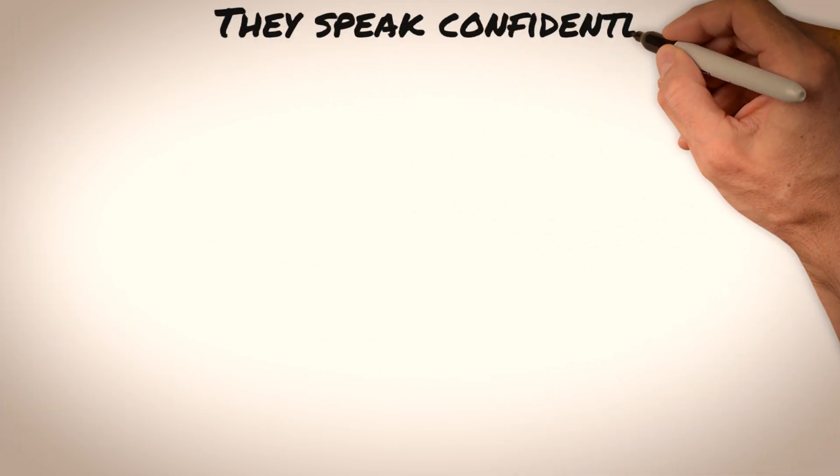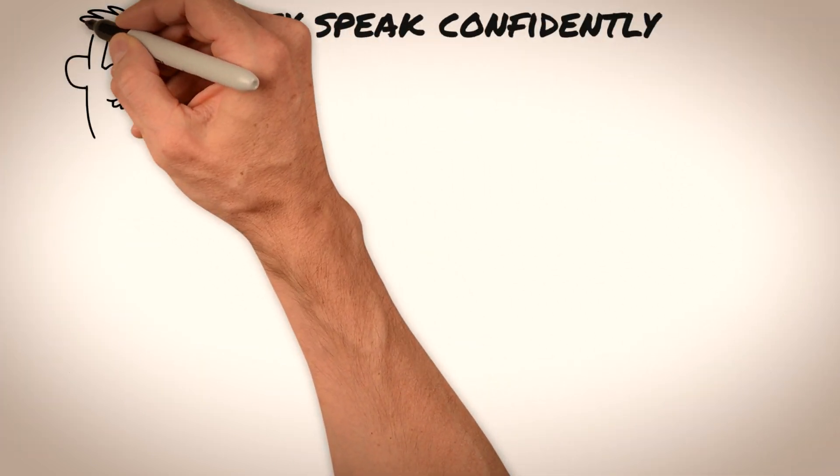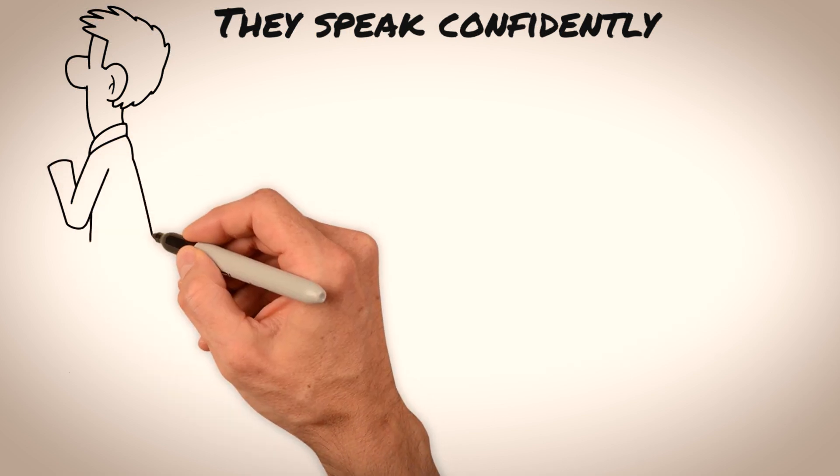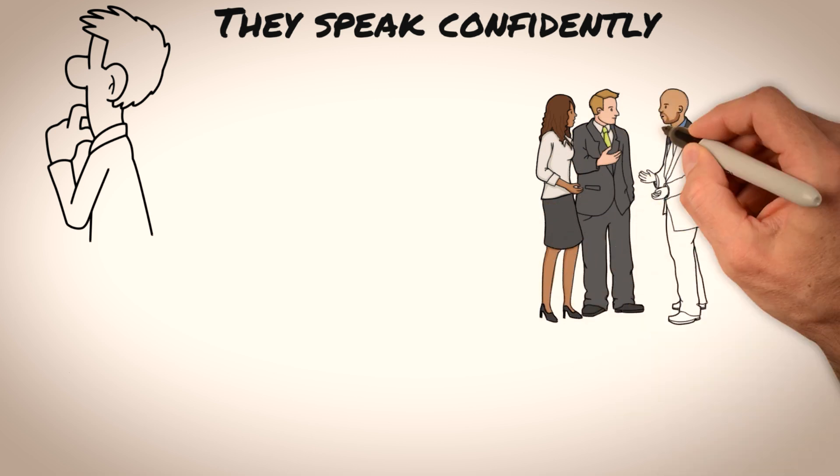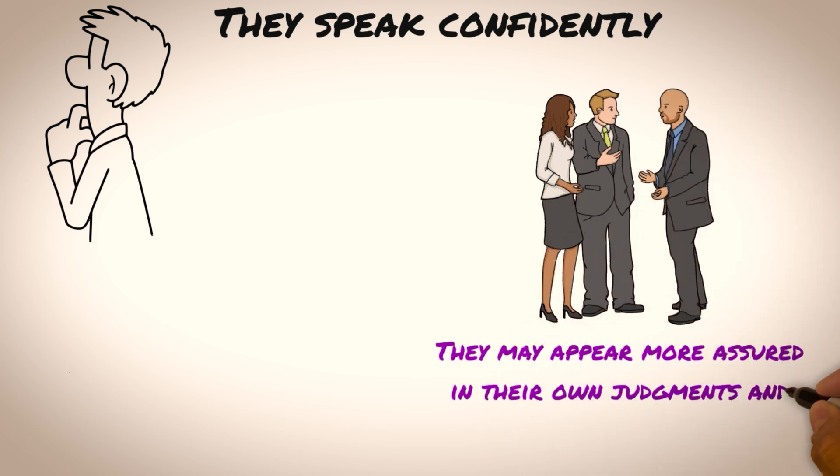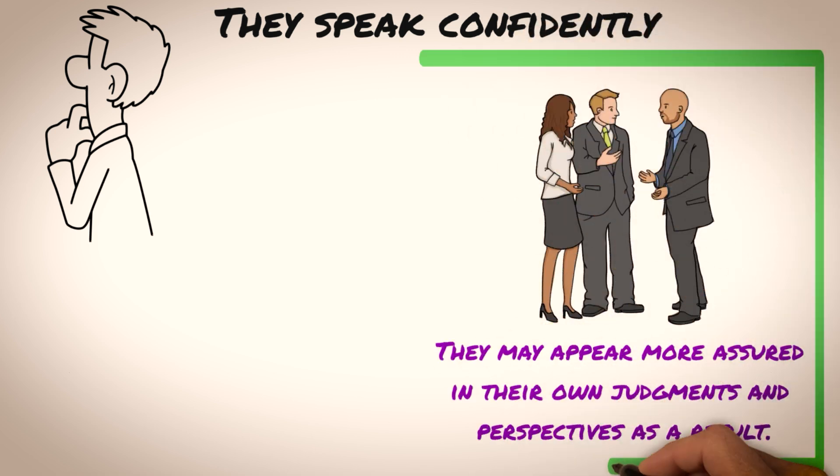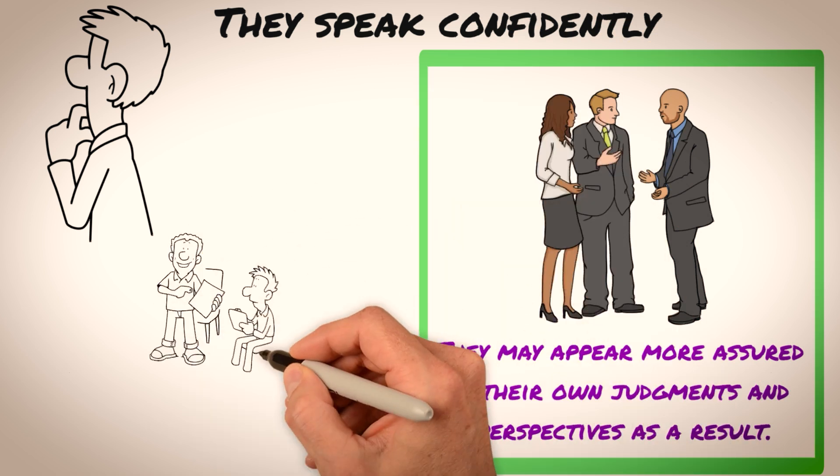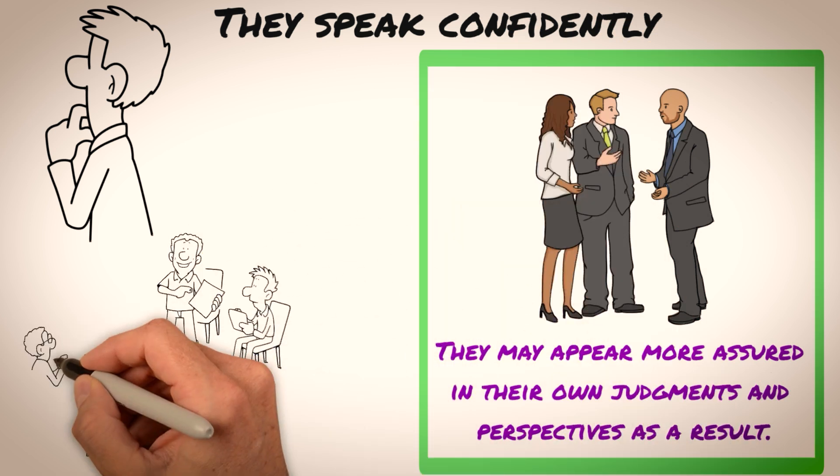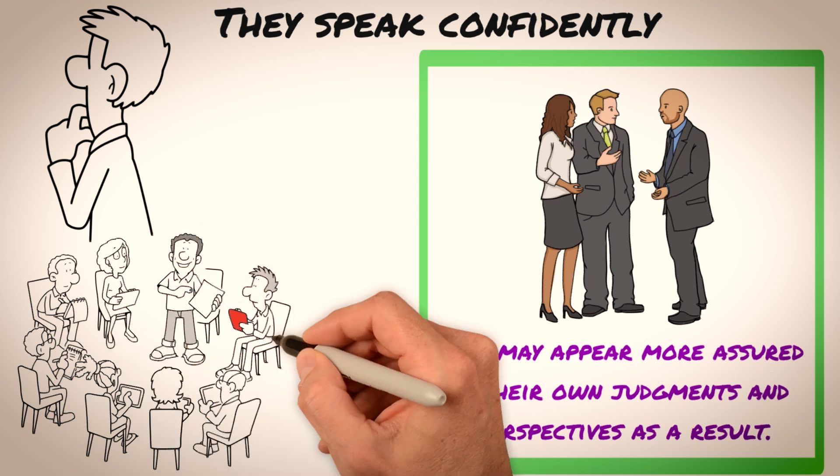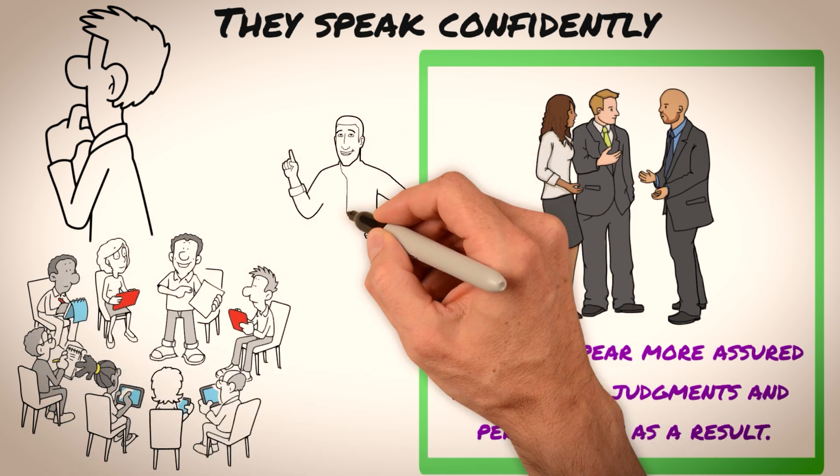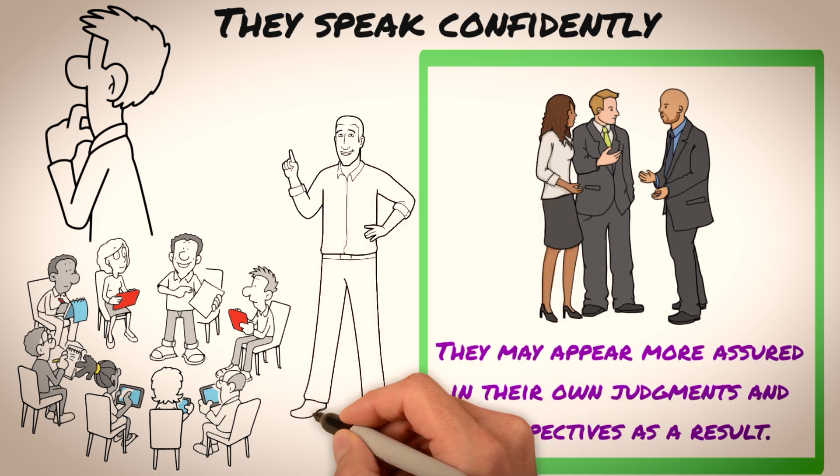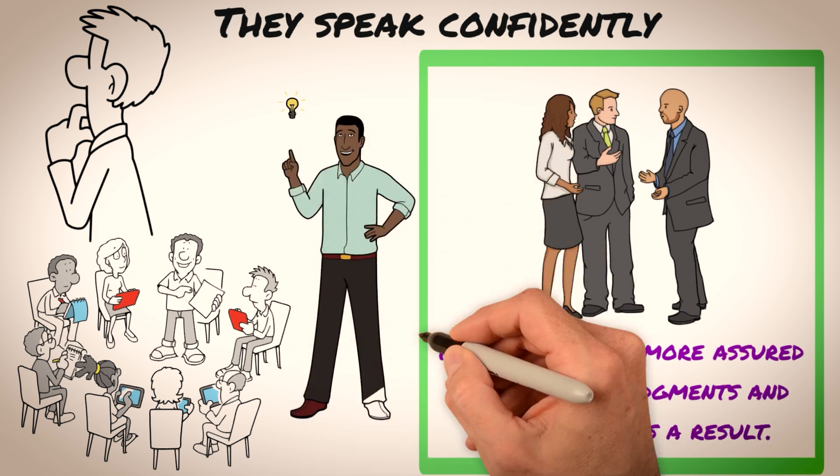They speak confidently. Sigma males are often independent thinkers who have a clear sense of their beliefs and values. They may not conform to societal expectations or seek approval from others, and this can make them appear more confident in their own opinions and perspectives. When communicating with others, Sigma males may speak with a level of conviction and confidence that can be perceived as intimidating. They may be unafraid to share their ideas and opinions, even if they are different from the norm or challenge the status quo.